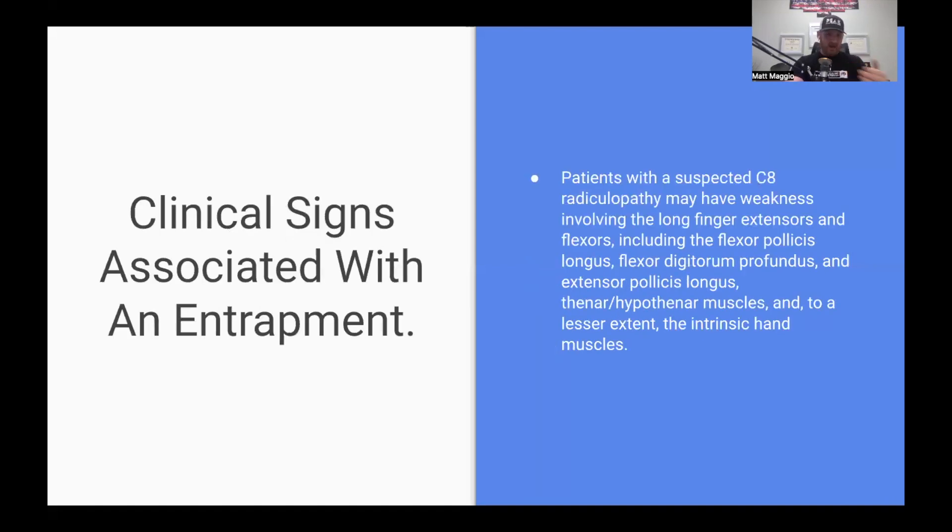So clinical signs of a nerve entrapment associated with this area. Patients with a suspected C8 radiculopathy, what does radiculopathy mean? Basically means it's going down to the arm, into the back of the shoulder, kind of like that diagram that I showed before.